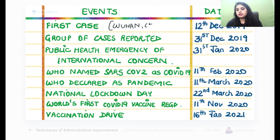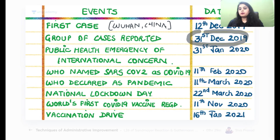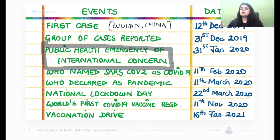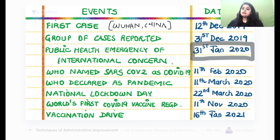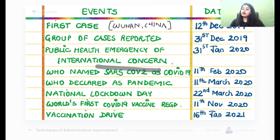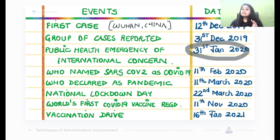By the end of 2019, a group of cases had been reported to WHO on 31st December 2019. WHO, which has lost a lot of credibility, declared it a Public Health Emergency of International Concern almost a month later — on 31st January 2020. At that point it was still not a pandemic; they had only given a warning.